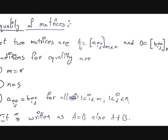The conditions for these two matrices being equal are: first, m is equal to r. If you observe carefully, m is the number of rows in matrix A and r is the number of rows in matrix B — both should be equal. And n is equal to s: n is the number of columns in the first matrix and s is the number of columns in the second matrix, so the columns in both matrices should also be equal.